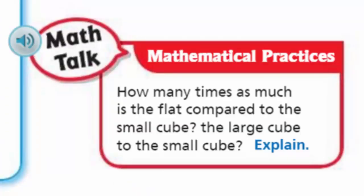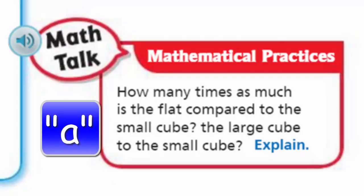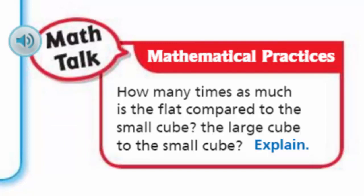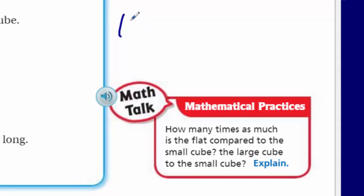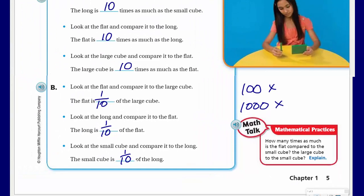Down here we have math talk. It says how many times as much is the flat compared to the small cube? The flat compared to the small cube - because the flat is 100 and the small cube is 1, we can say it's 100 times as much. When we compare the flat to the small cube, the large cube to the small cube, it's going to even grow more. You would need 1,000 of those little small cubes to make up one large cube. Now let's move on to the next page.